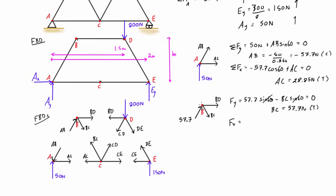Taking the sum of forces in the x-direction at joint B: we have 57.7 times cos 60 plus 57.7 times cos 60 plus BD, all equal to zero. Cos 60 is 0.5, so 0.5 times 57.7 times 2 gives us BD equals negative 57.7 newtons. That negative sign means BD is in compression.